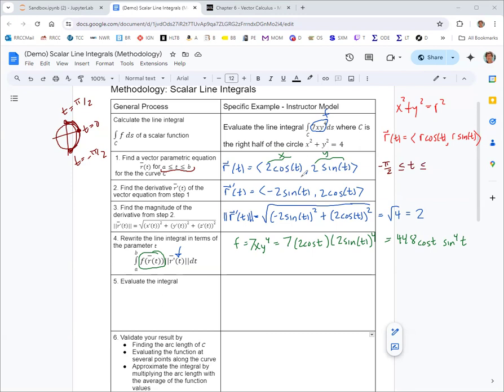Because that parameterization traces out the full circle centered at the origin radius 2, and we just wanted the right half. So that's a and that's b. And those get used as the limits of integration. So we're now ready to put this all together and get our integral.